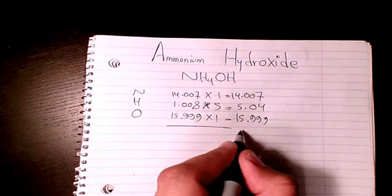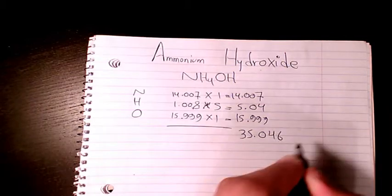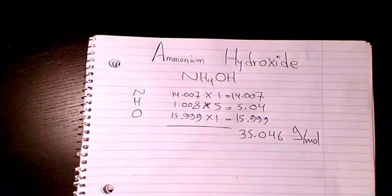That makes it 35.046 grams per mole. So that's the molar mass or molecular weight of ammonium hydroxide.